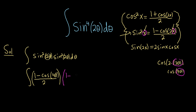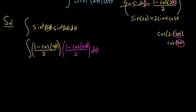So both factors become 1 minus cosine of 4 theta over 2. The two denominators multiply together: 2 times 2 is 4, so we can pull out 1 fourth and we're left with 1 minus cosine 4 theta times 1 minus cosine 4 theta inside the integral.